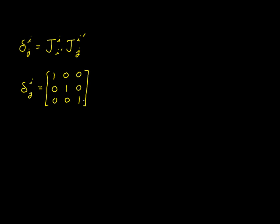Those of you who've had linear algebra will recognize this immediately as the identity matrix. The Kronecker delta plays the same role in tensor calculus that the identity matrix does in linear algebra. Looking back at the expression, you see that each of these two things can be expressed as three-by-three matrices, so we have matrix multiplication going on here equaling the identity matrix. That means these two matrices are the multiplicative inverse of each other.